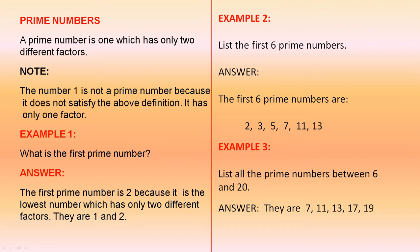A prime number is one which has only two different factors. Note: the number one is not a prime number because it does not satisfy the above definition. It has only one factor.